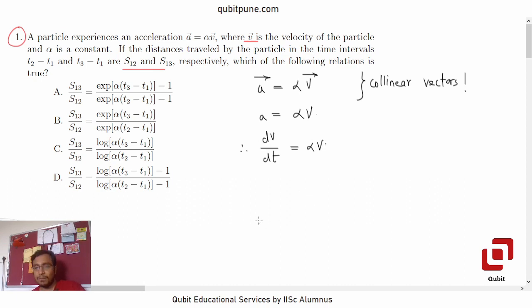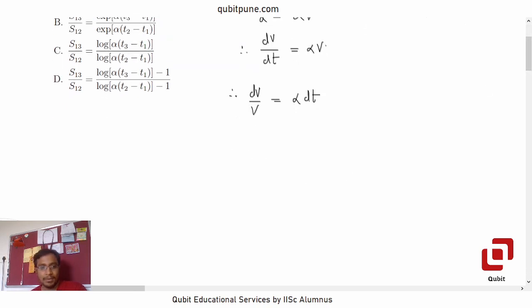This is now a variable separable differential equation, dv by v is equal to alpha dt. Let us integrate this now. So when you integrate this, what are we going to get? ln v is equal to alpha t plus c.